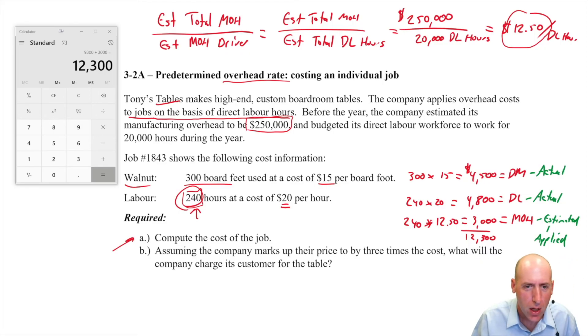Let's read the question. Required A: Compute the cost of the job. Okay, so I've answered part A. The cost of the job was $12,300. That's our answer for A.